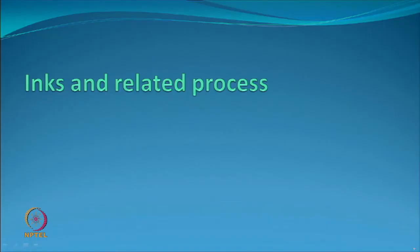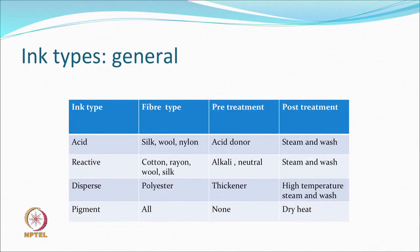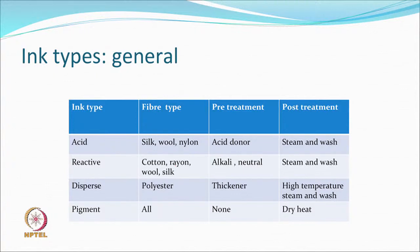Moving to ink and related processes: acid type ink is suitable for silk, wool, and nylon, but may require pre-treatment and post-treatment. In pre-treatment, you may have some acid — latent or otherwise. In post-treatment: steaming, washing, and drying. Reactive inks were initially recommended for cotton and other cellulosics, but theoretically can be used for wool and silk. For cotton, an alkali is required. For wool and silk, no alkali may be needed in pre-treatment, though steaming and washing is still recommended.